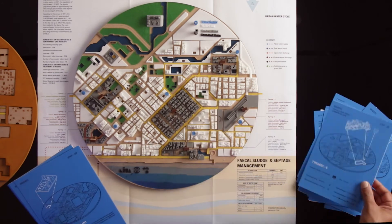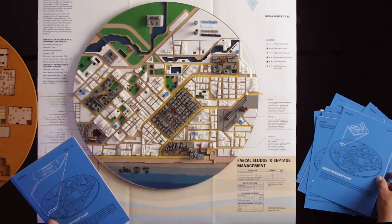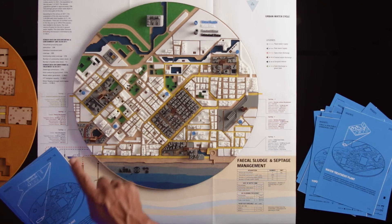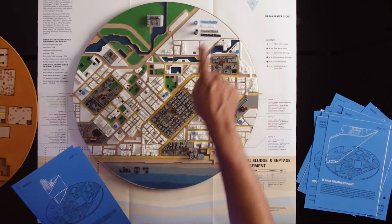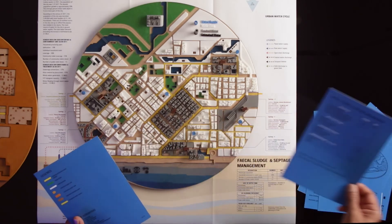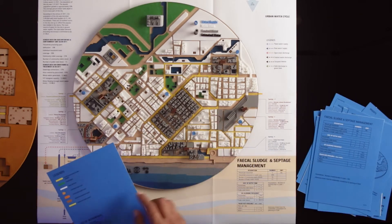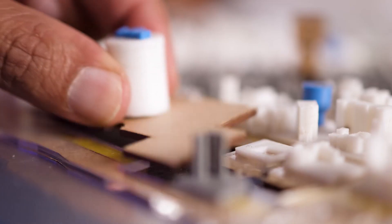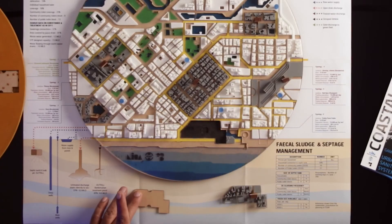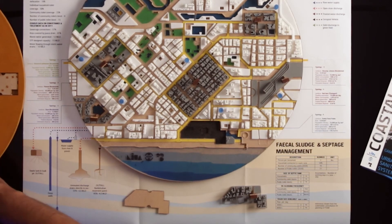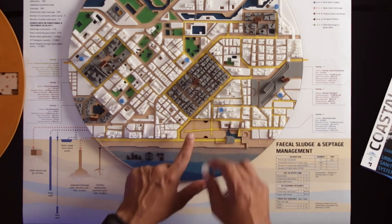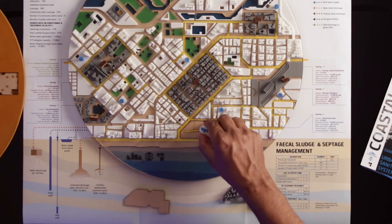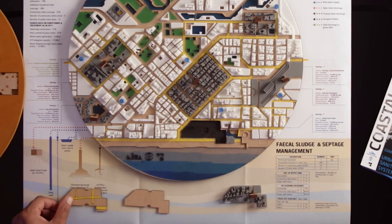For each of the six clusters, data related to the existing water and sanitation system is provided. As per the instructions of the trainer, participants will use the given information to determine the most appropriate sanitation system for various typologies in the city. For a demonstration, let us consider the typology of institutional and commercial area within the city, having 40% sewered and 60% non-sewered connections. The wastewater from the sewered connections gets fully treated, whereas there is no treatment process for the non-sewered connections in the cluster.